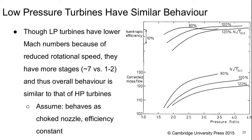Things are not too different in a low pressure turbine. There are lower Mach numbers in the LP turbines because of the reduced rotational speed, but they tend to have more stages — maybe seven versus one or two. The overall behavior is pretty similar to that of high pressure turbines. We're going to be able to assume that the turbine behaves like a choked nozzle with constant efficiency.